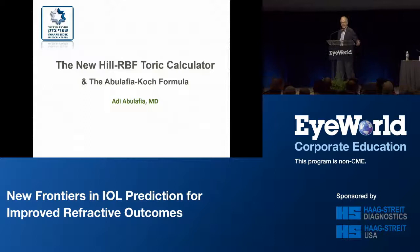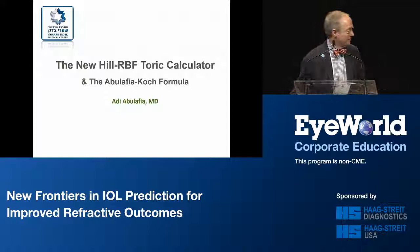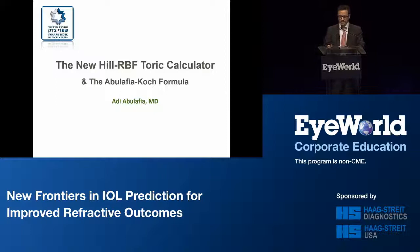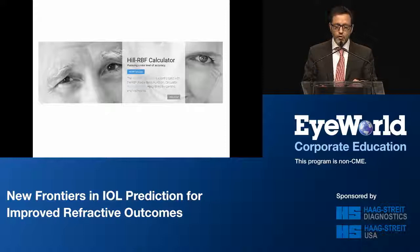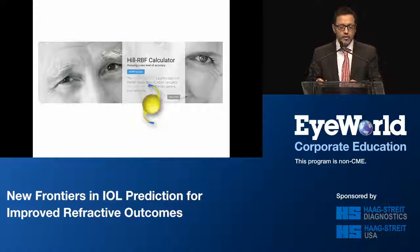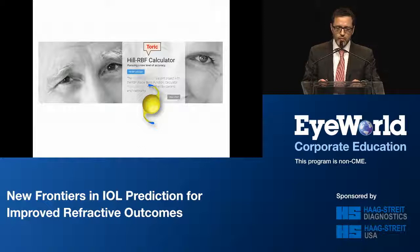We left out one little thing — astigmatism. Adi Abolafia is going to tell us about how we can combine an artificial intelligence approach, the Hill formula, with a toric calculator. Many of our cataract patients suffer from corneal astigmatism as well, which should be addressed during cataract surgery, preferably with toric IOLs. So what is more obvious than to have a Hill RBF toric calculator? This calculator should be available on the next LENSTAR update.